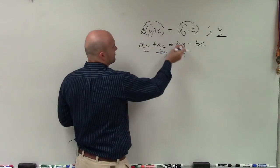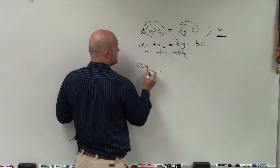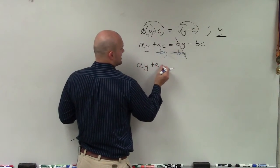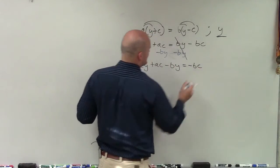Therefore, by minus by is going to go to 0. I can't subtract by from any of these terms. So I have ay plus ac minus by equals negative bc.